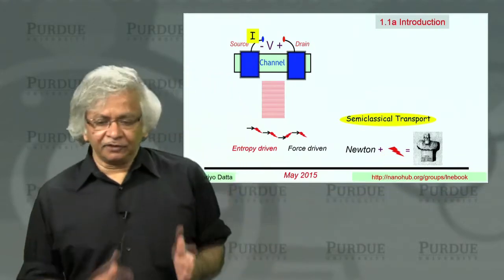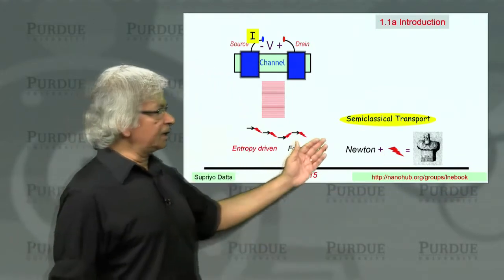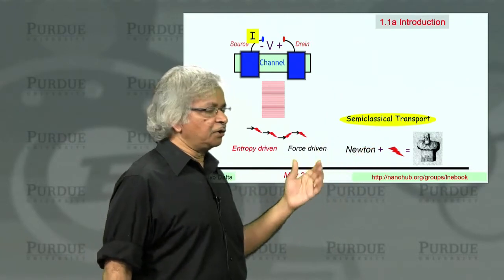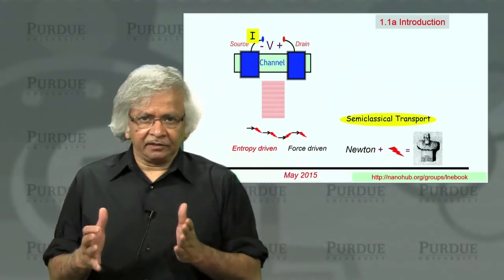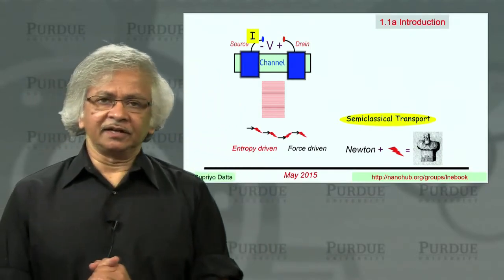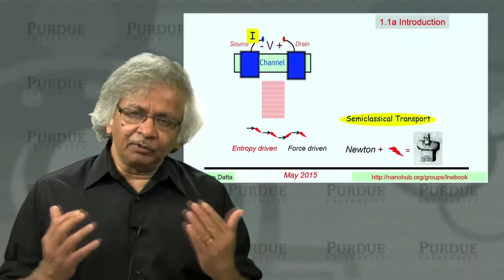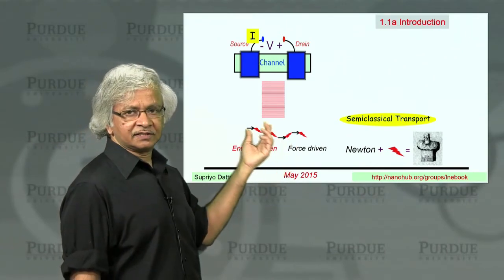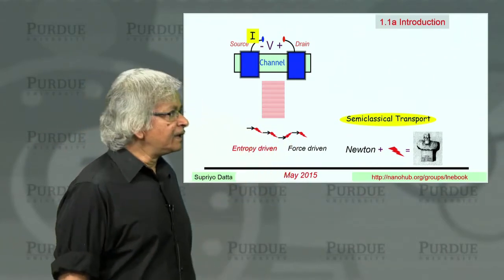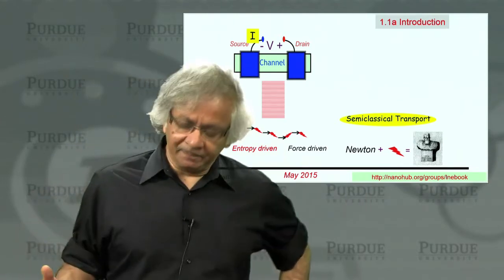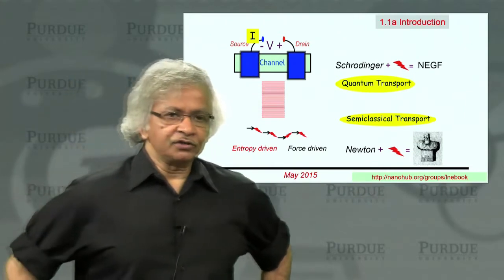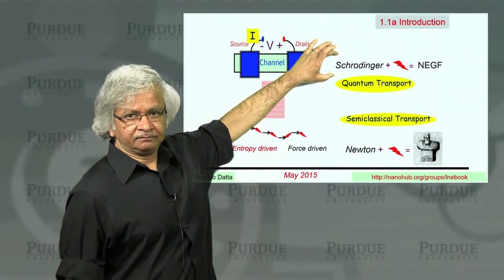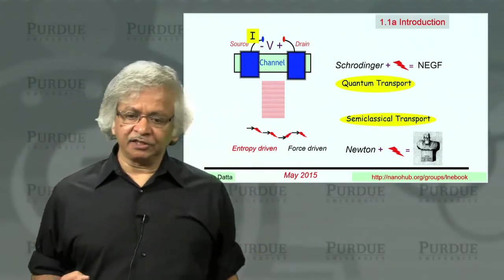In Part A of this course, we were talking about semi-classical transport, where you view electrons as particles. What we showed was that this new perspective inspired by developments in nanoelectronics gives you a simple way of looking at transport by separating out these force-driven processes from the entropy-driven processes. In this part, we'll do much the same but for quantum transport. In quantum transport, Newton's laws get replaced by Schrodinger equation, which takes into account the wave nature of electrons.